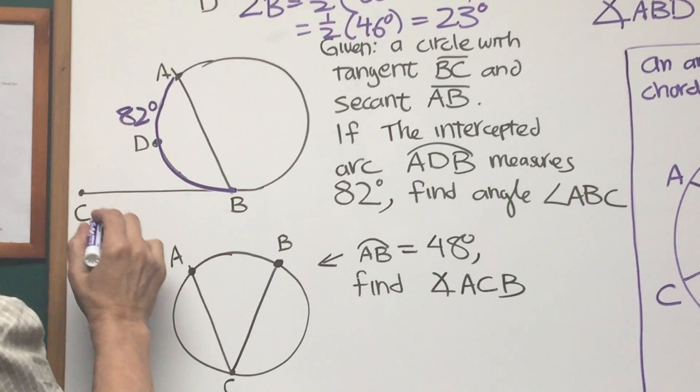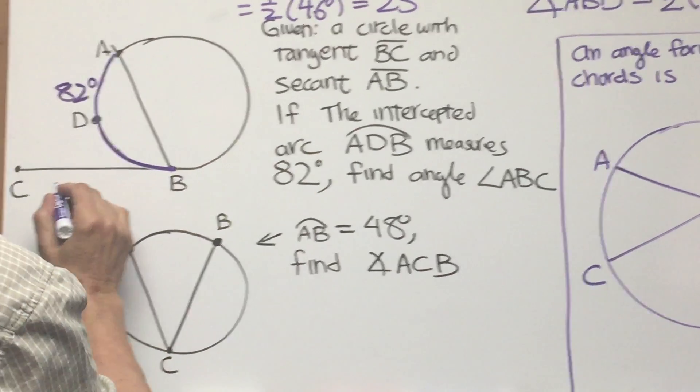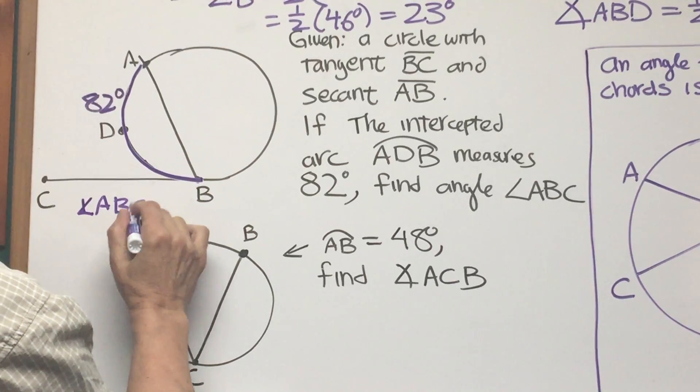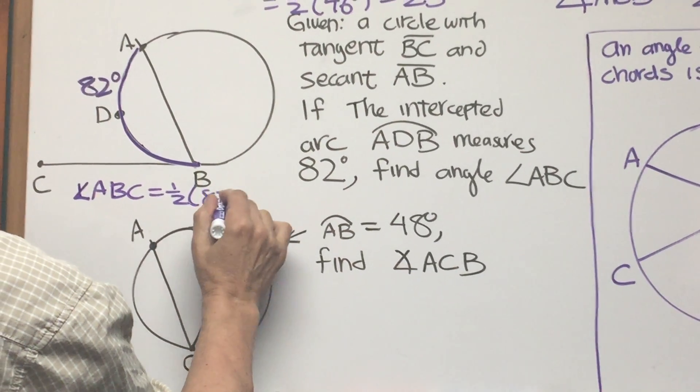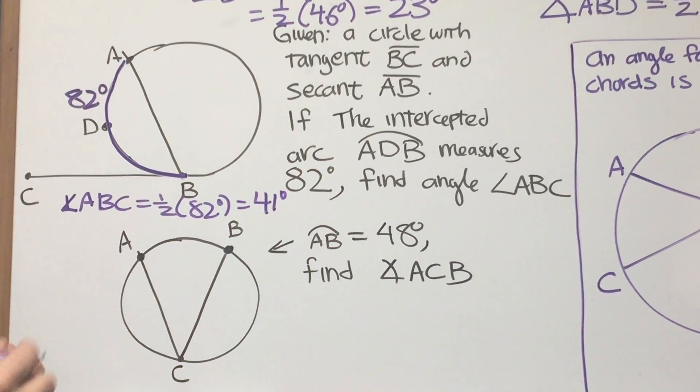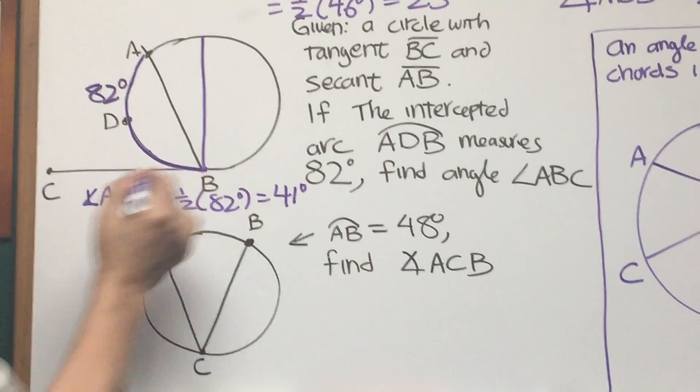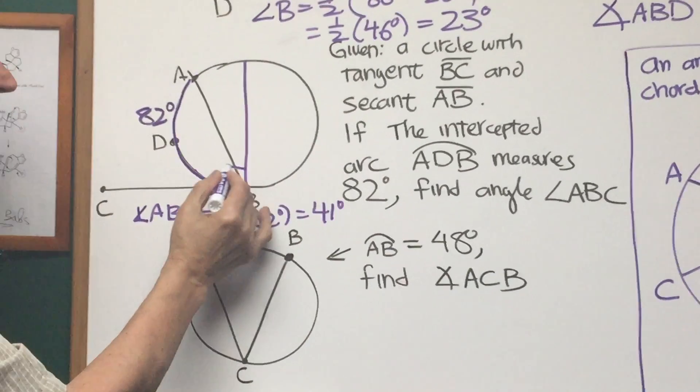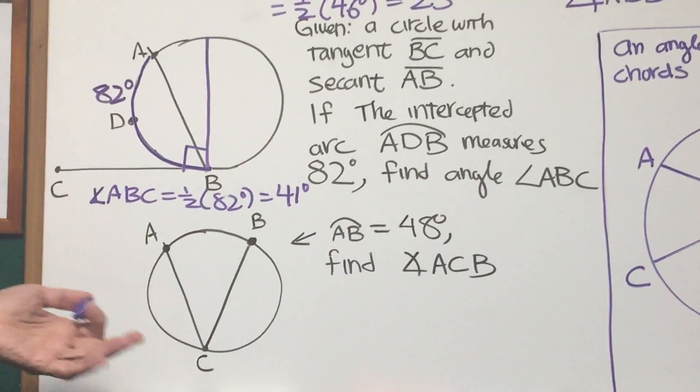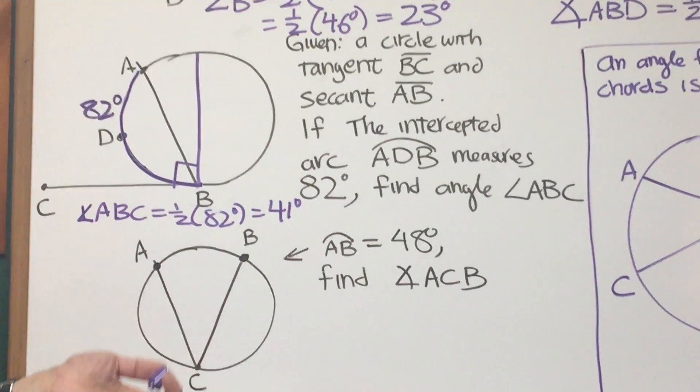ABC and the measure of angle ABC is going to be exactly half the measure of angle 82 degrees. So the measure of angle ABC is one half 82 degrees and that's 41 degrees. And you can see how this works out. What if this intercepted, what if this secant were the diameter of a circle? Okay, then you know you'd have a right angle between the tangent and the diameter of the circle. You know the right angle is 90 degrees. Well you can see what's the measure of that intercepted arc. It's half the arc of the circle.